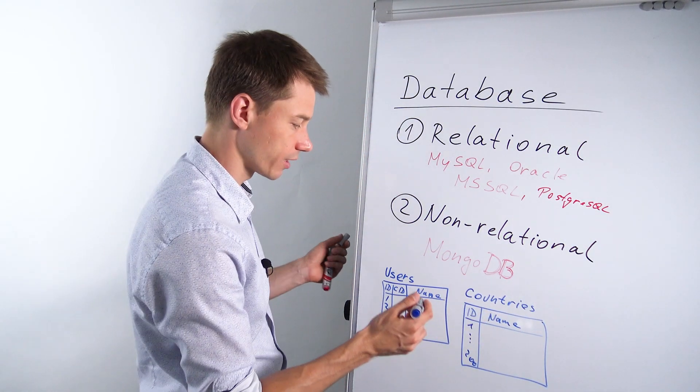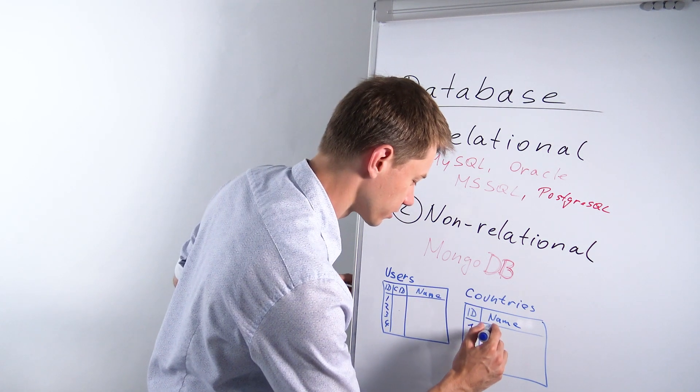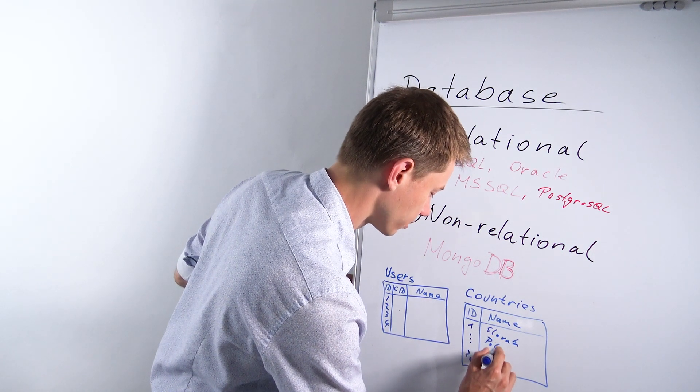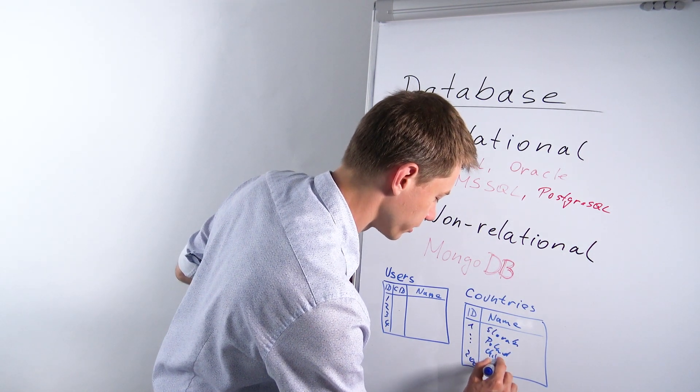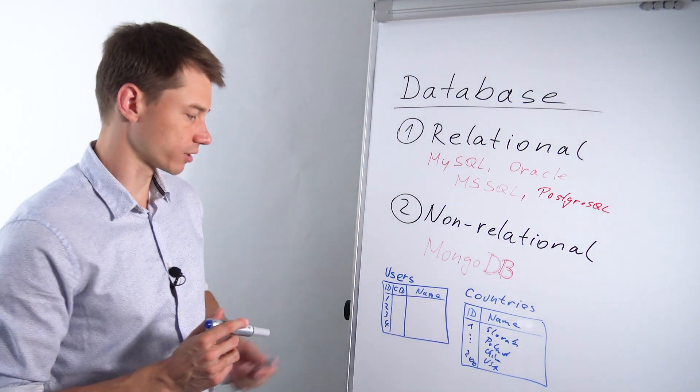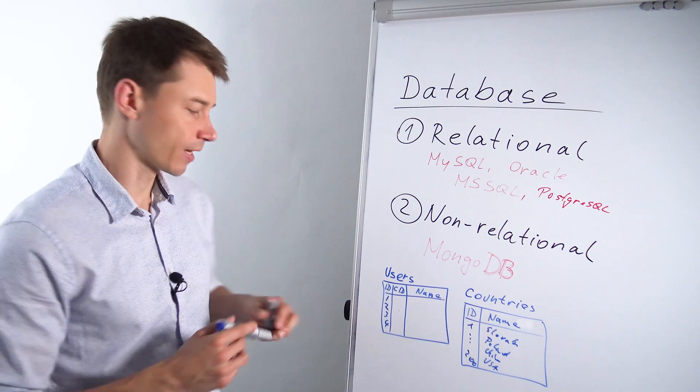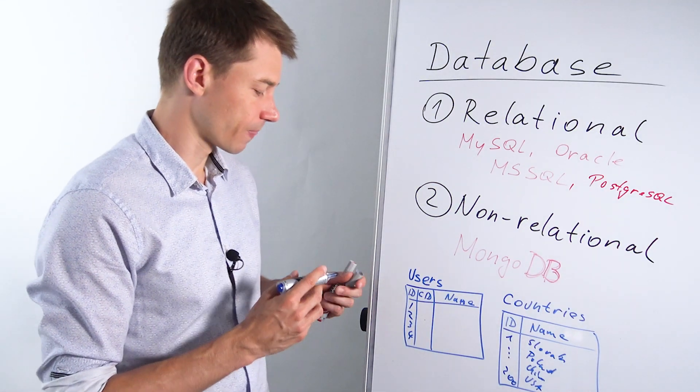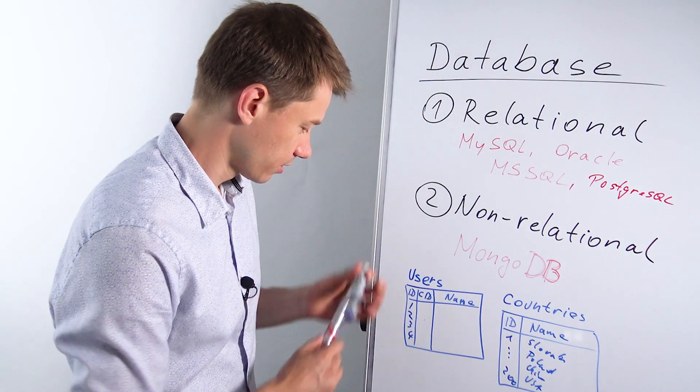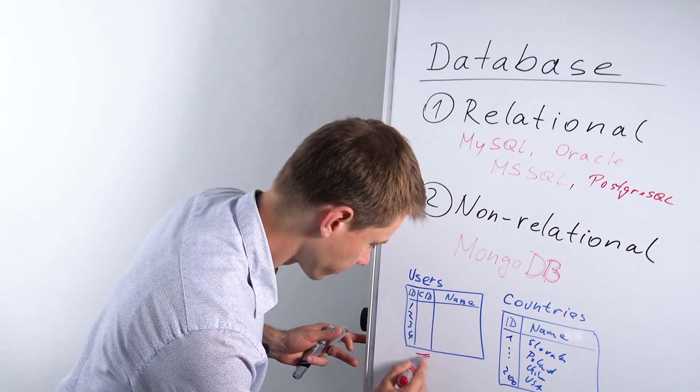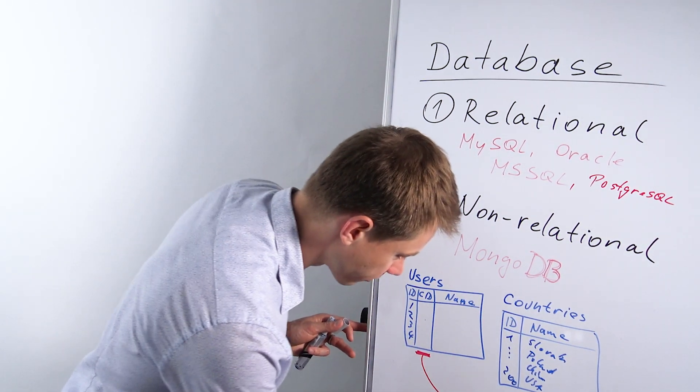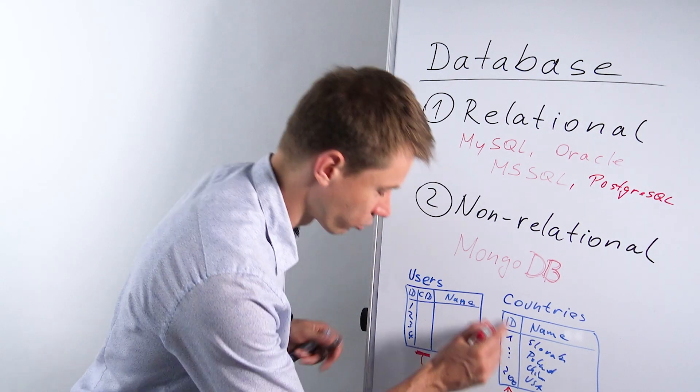And every country has a name. So it could be say Slovakia could be the first one. It could be Poland. It could be China. It could be USA etc. Right. You have all these countries in a separate table. And now what is important is that these tables relate to each other. This column here, this is country ID.